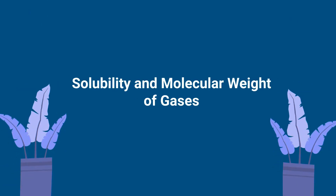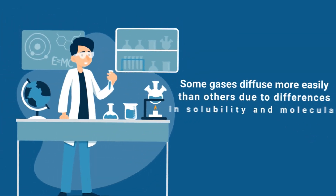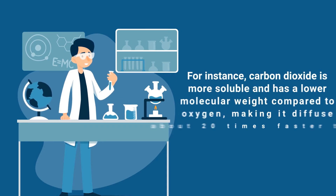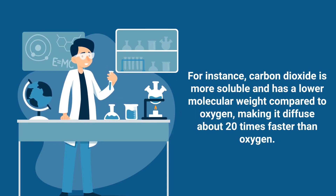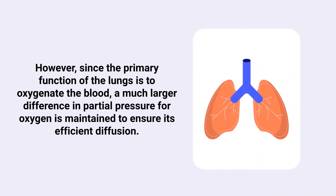You also have to factor in the solubility and molecular weight of gases. Some gases diffuse more easily than others due to differences in solubility and molecular weight. For instance, carbon dioxide is more soluble and has a lower molecular weight compared to oxygen, making it diffuse about 20 times faster than oxygen. However, since the primary function of the lungs is to oxygenate the blood, a much larger difference in partial pressure for oxygen is maintained to ensure its efficient diffusion.